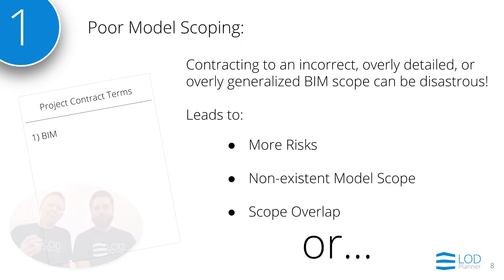The first one is poor model scoping. When you don't have a correct scope — or sometimes you don't even have a scope — sometimes it's too detailed, sometimes it can be just overly generalized, it can be disastrous. We've seen owners just have a very general scope: 'I want BIM, I want LOD 500.' Then we've seen owners copy and paste contracts and they just don't get what they want — it's somebody else's desires, not their own. There's a lot of scope risk when people are signing up for BIM not knowing exactly what they're going to have to do, which causes some big issues.